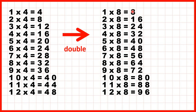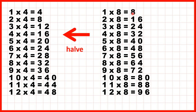4 times 2 is 8. 8 times 2 is 16. 12 times 2 is 24, and so on. And looking at it the other way, if we halve what's in the 8x table, we get what's in the 4x table. Remember, to halve or to find half of a number, we divide it by 2. 8 divided by 2 is 4. 16 divided by 2 is 8. 24 divided by 2 is 12, and so on.